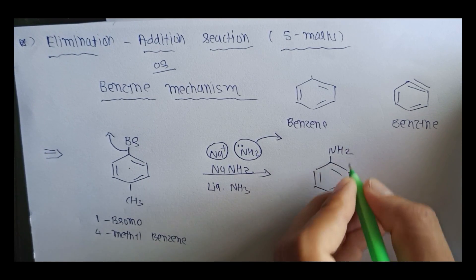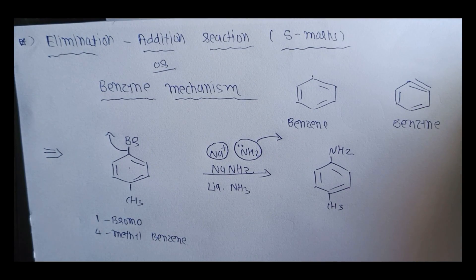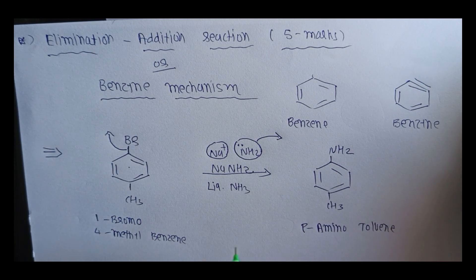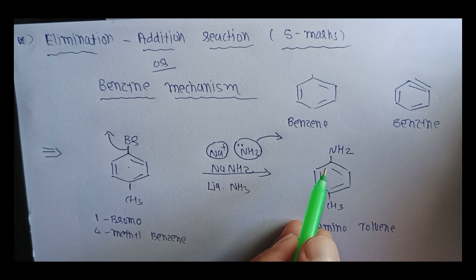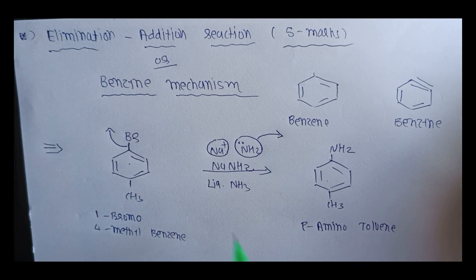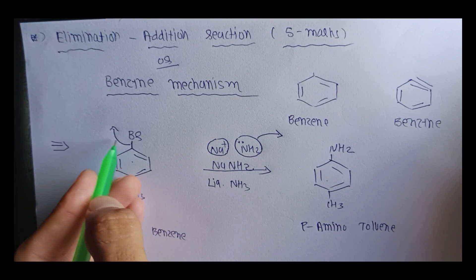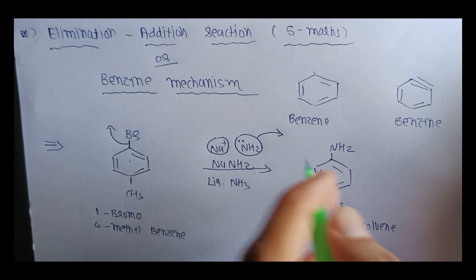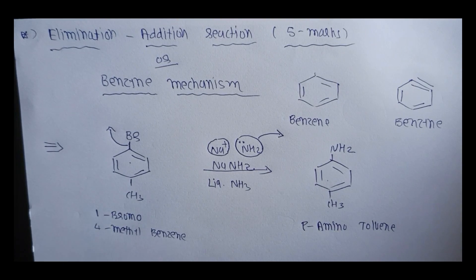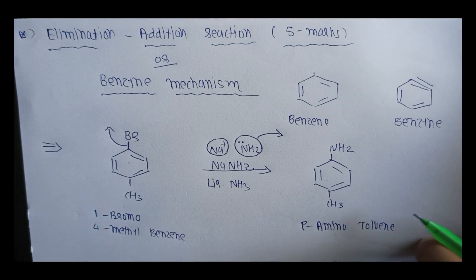The product contains NH2 and CH3. The Elimination Reaction gives para-aminotoluene, also called 1-Amino-4-Methylbenzene. This is the product of Elimination Addition Reaction — first the group is eliminated, then the group is added. This is the Benzyne Mechanism — the common reaction of Elimination Addition Reaction.